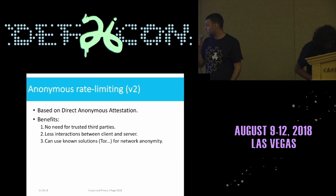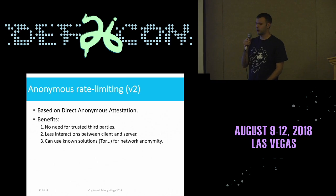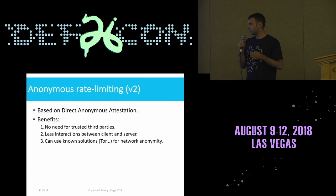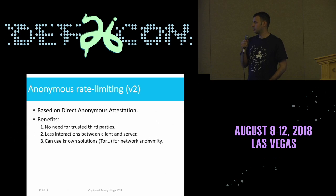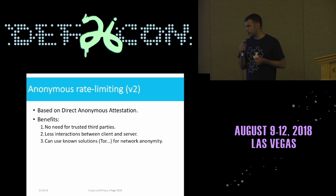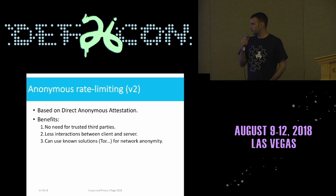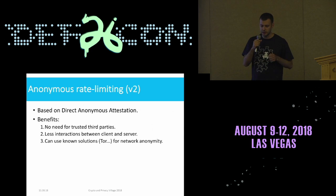As Konark said, I'll talk about our new anonymous rate limiting system, which is based on direct anonymous attestation. This system has several benefits over the previous one. First, we remove the need for trusted third parties. Second, there are fewer interactions between the client and the server — in the previous system we required one blind signature per message, so the client had to first get the message blind-signed, then actually send it. Third, we can now use known solutions for network anonymity like Tor, which in the previous system was more complicated because of the custom third-party proxies.